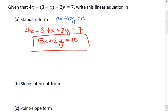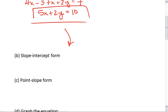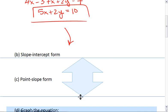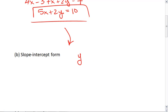I'm going to use the standard form to solve for the following two forms. Slope-intercept form is of the form y equals mx plus b.